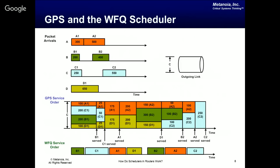In practice, we build a weighted fair queuing (WFQ) scheduler, which is a packetized version of GPS. In our specific example with the same queues, what we see on the timeline is the arrival order of packets: A1, B1, C1, and D1 arrive simultaneously at the start, then A2 arrives right after A1, whereas B2 and C2 arrive more spaced in time. We first look at how the GPS scheduler would serve these packets, then compare with how the WFQ scheduler serves them.